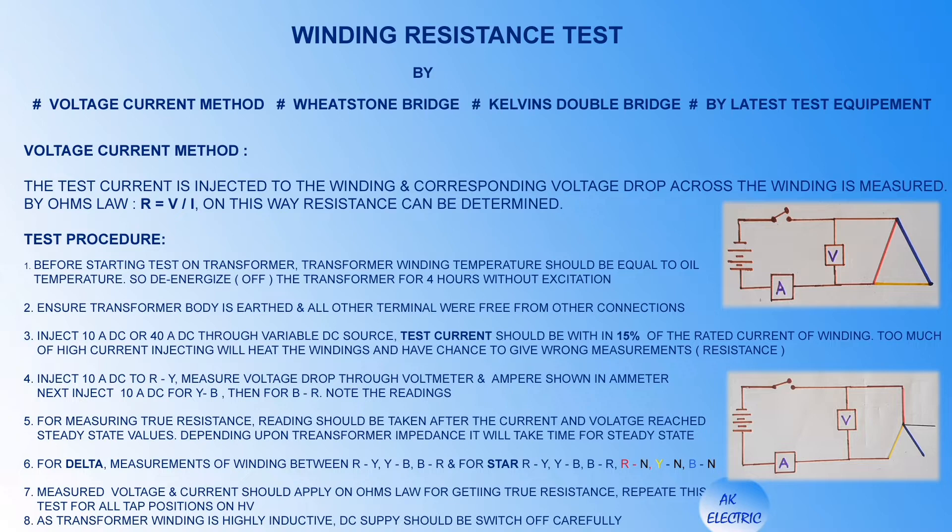For delta connection, measurement is made between R-to-Y, Y-to-B, and B-to-R. For star connection: R-to-Y, Y-to-B, B-to-R, R-to-N, Y-to-N, and B-to-N. Measured voltage and current should be applied to Ohm's law to get the true resistance. Repeat this test for all tap positions on the HV side. As transformer winding is highly inductive, DC supply should be switched off carefully.